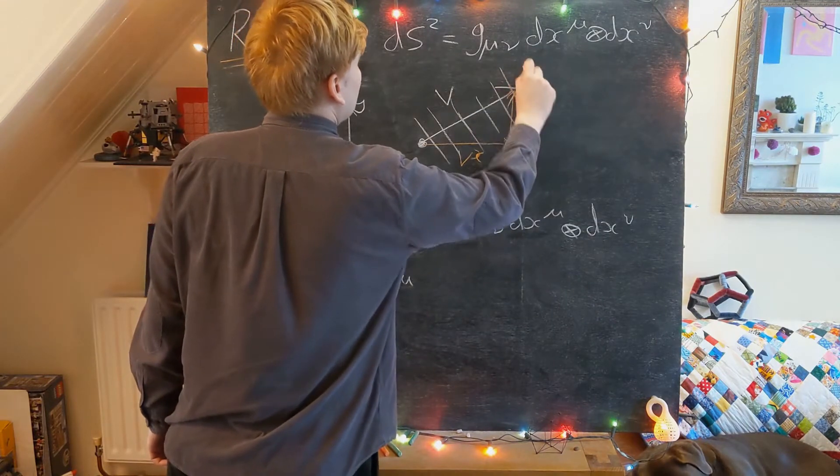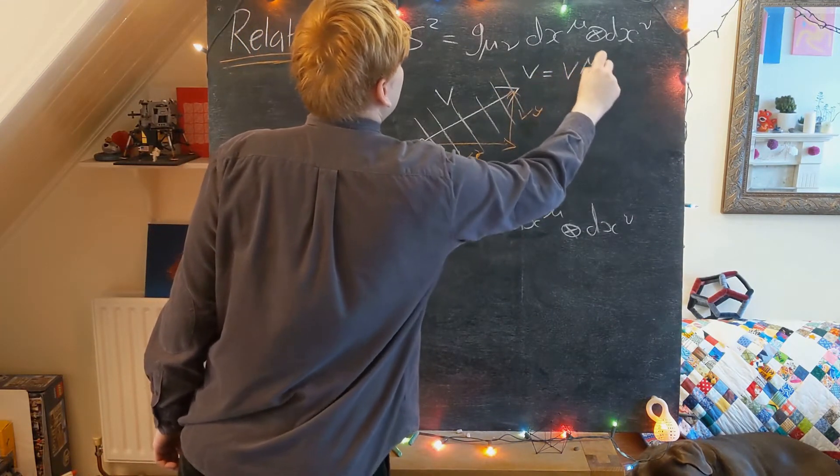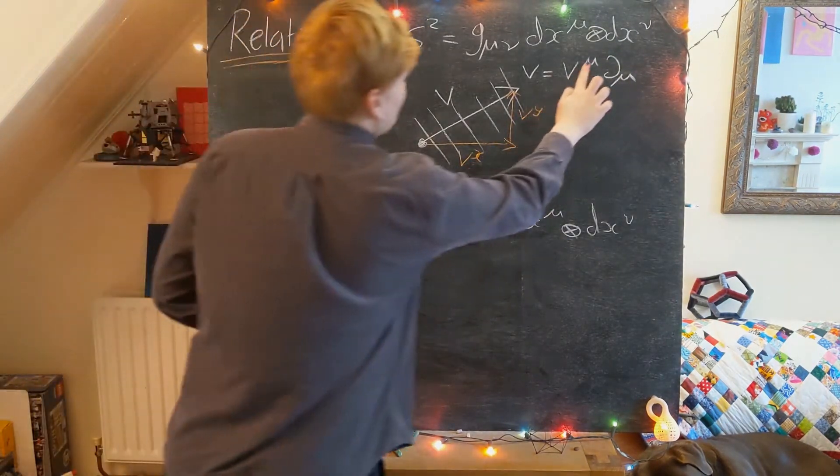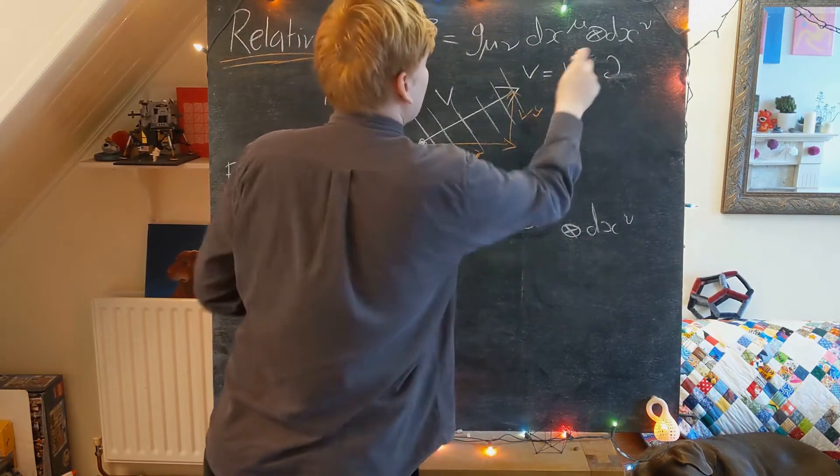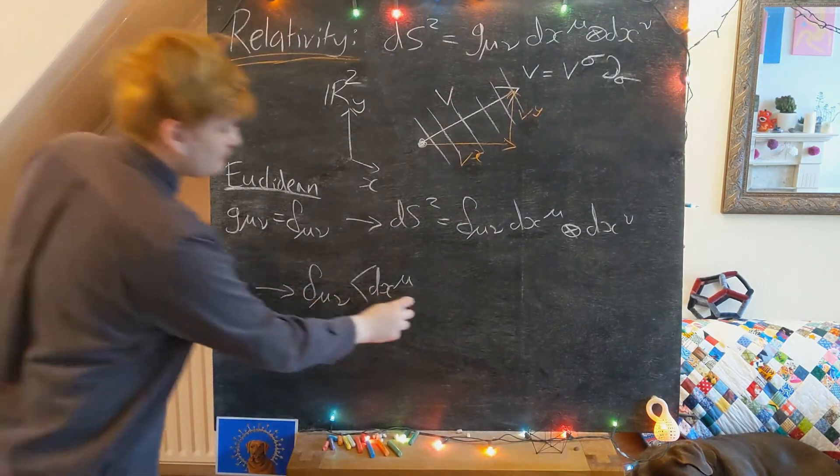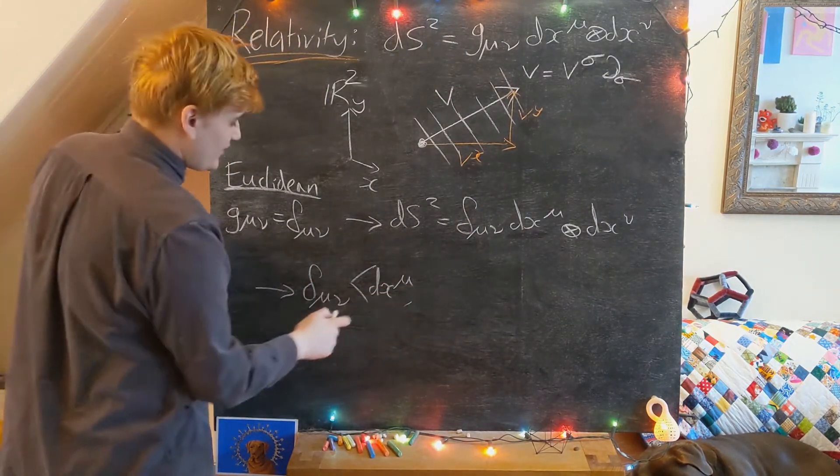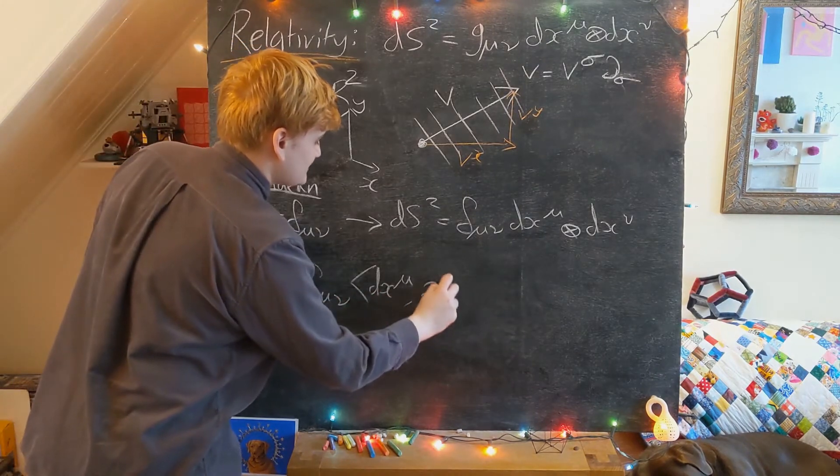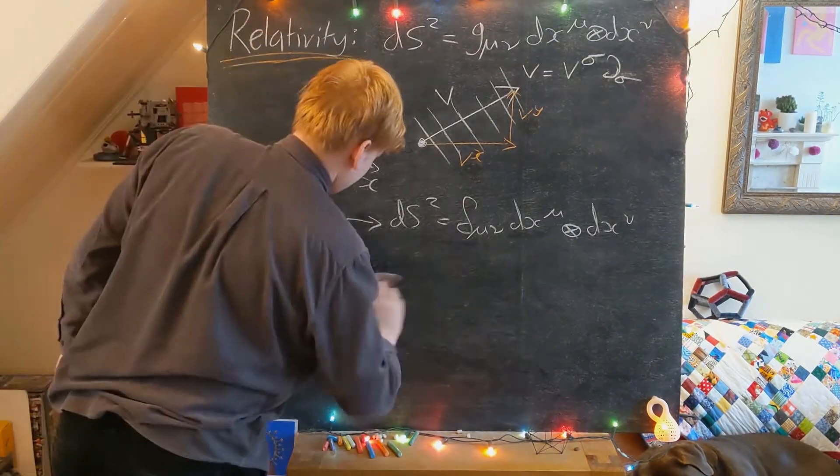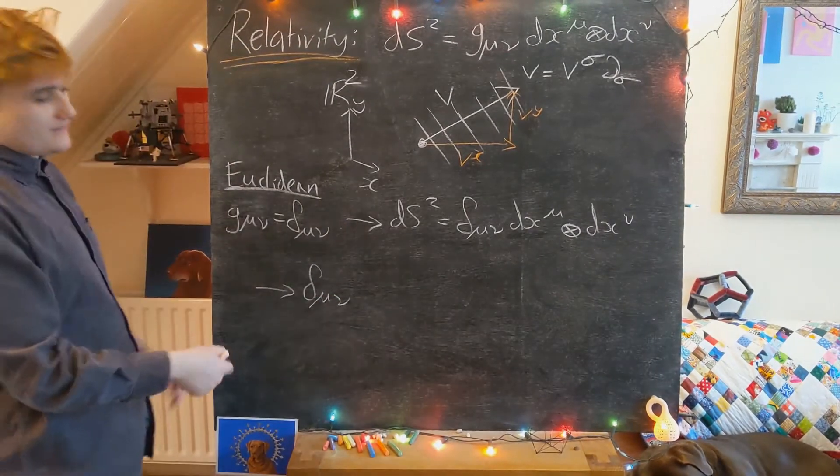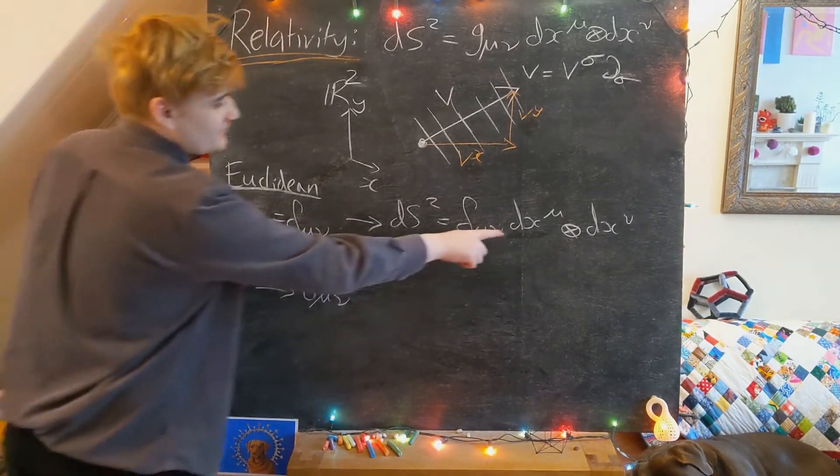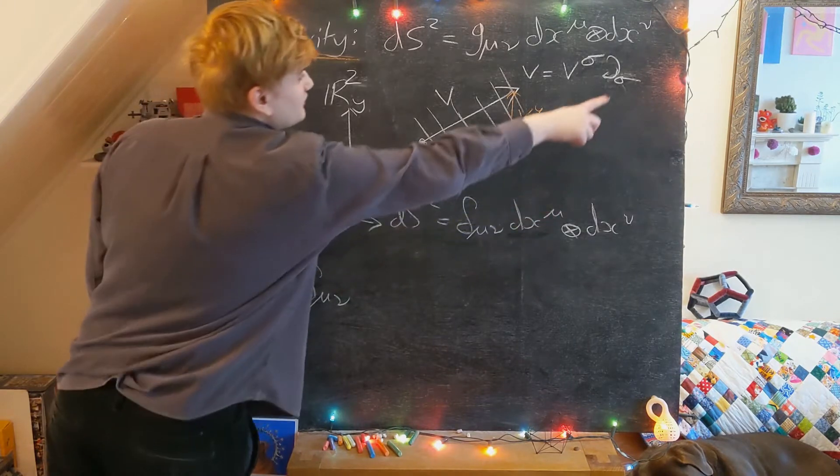And now what we're doing is we're subbing in this vector v, which we saw we could express as its components and then the coordinate basis. I should probably use a different index just for clarity. So of course we just sub in now our vector component, which we can pull out, and our basis component, which is going to give us the Kronecker delta.